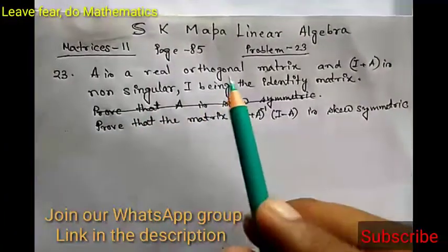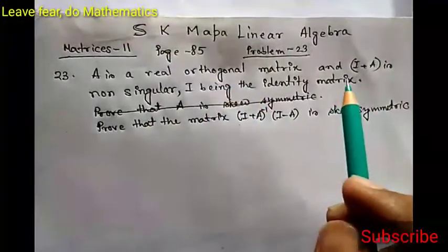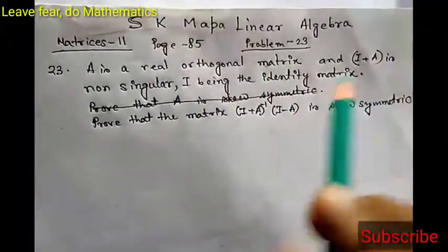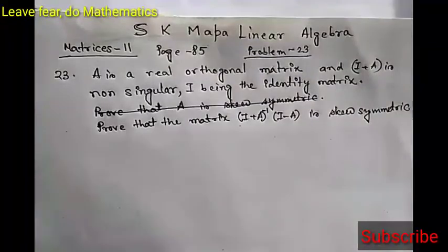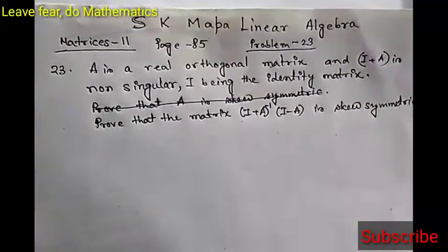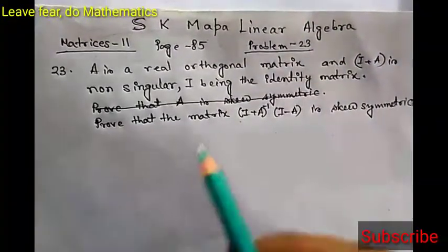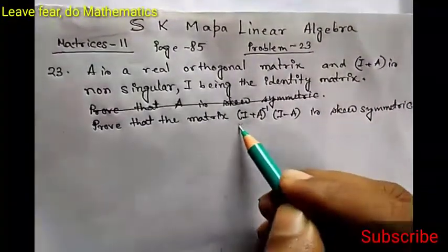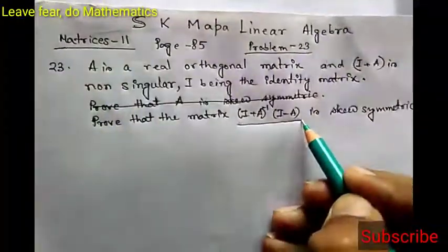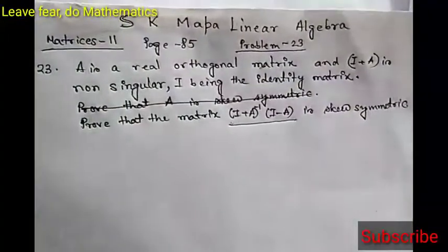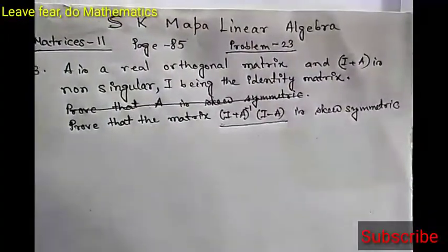The problem says A is a real orthogonal matrix and I plus A is non-singular, I being the identity matrix. Then prove that the matrix (I plus A) inverse into (I minus A) is skew symmetric.